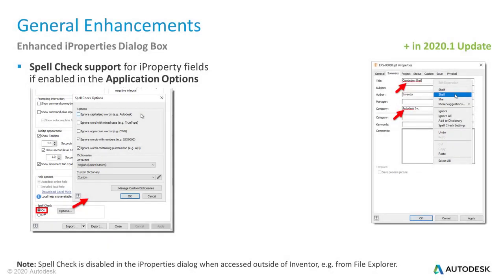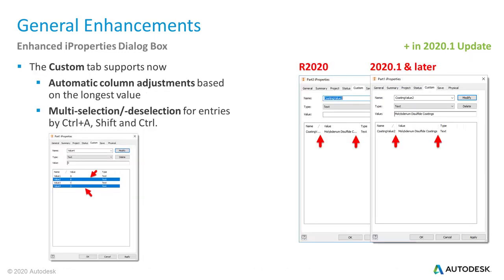So far, so good for the performance and productivity improvements. With the Inventor 2020.1 update, you get spell check support added to the iProperties dialog. To make use of spell check, don't forget to turn it on in the application options on the General tab. Staying in the iProperties dialog box, especially on the Custom tab — the columns now automatically adjust based on the longest value in each column. You no longer need to manually expand the Names or Values column to see the names and values of custom properties.